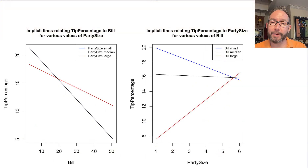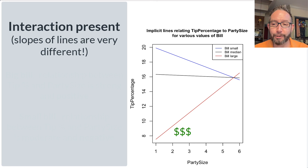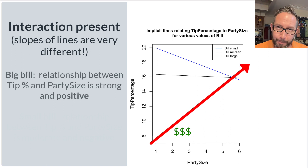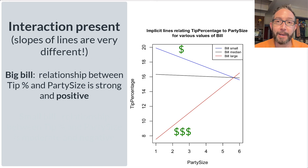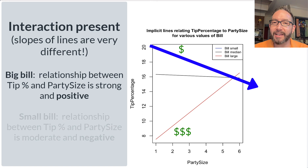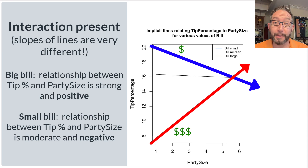With the TIPS dataset — fitting a model predicting tip percentage from bill amount, party size, and their interaction — the visualization shows that for large bills, bigger party size leads to higher tip percentage. But for small bills, the relationship reverses: larger party size is associated with lower tip percentage. The relationship between tip percentage and party size is not constant; it depends on the bill amount.